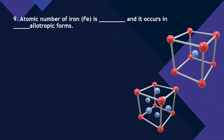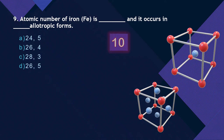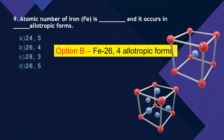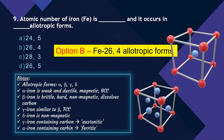Question 9: The atomic number of iron is — and it occurs in how many allotropic forms? The correct option is: atomic number 26 and four allotropic forms. The four allotropic forms are alpha, beta, gamma, and delta iron.